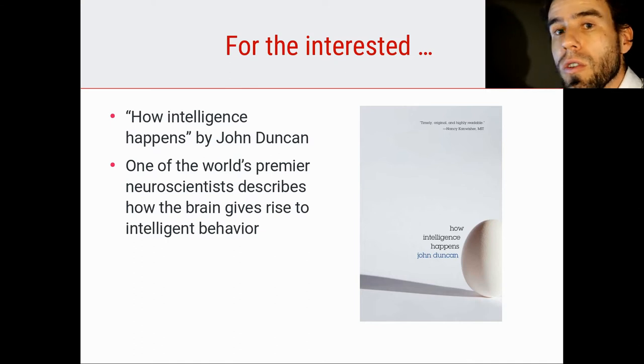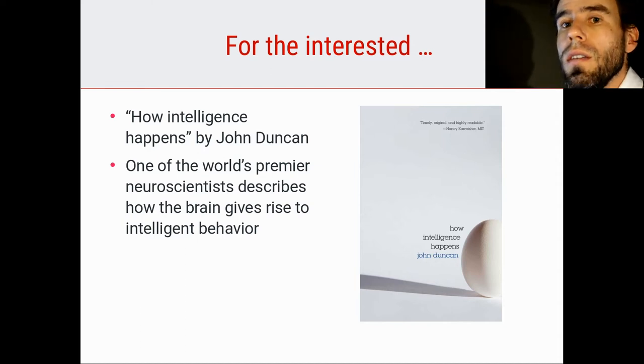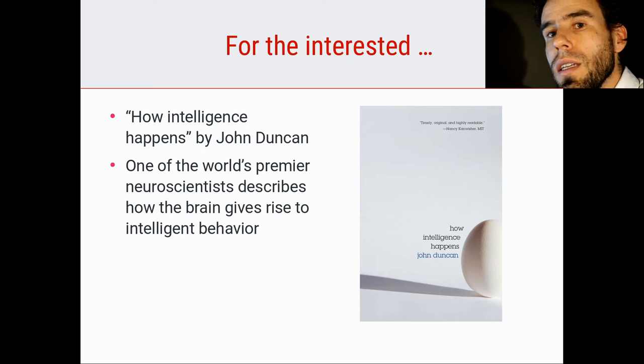And we will also meet some of his contributions to research at later points in this course. For example, when during the course on attention, the lecture on attention, we're going to talk about the biased competition theory of attention, which was proposed, among others, by John Duncan. So he's really a very big name in the field. And in this book, which I like a lot, he talks about how the brain gives rise to intelligent behavior. So it's really a book that, like this course, operates on the frontier between psychology and biology, right? The link between brain and behavior.